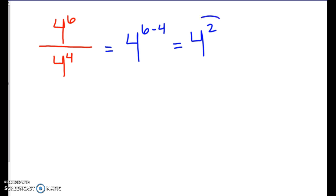So I keep 4 here and then I do 6 minus 4, and 6 minus 4 ends up being 2. So 4 to the second, that is just a simplified version of 4 to the 6th divided by 4 to the 4th.